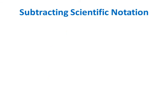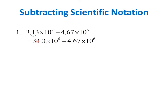Now let's subtract some numbers in scientific notation. First, let's say we have to get the difference of 3.13 times 10 to the 7 and 4.67 times 10 to the 6. Notice that they have different exponents, so we have to rewrite the number with the larger exponent. If we want to make the 7 a 6, we have to move the decimal point one place to the right. So we get 31.3 times 10 to the 6. Now since they have the same exponents, we can get the difference of the coefficients. 31.3 minus 4.67 is 26.63, then we copy times 10 to the 6.